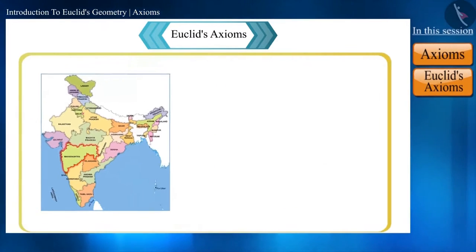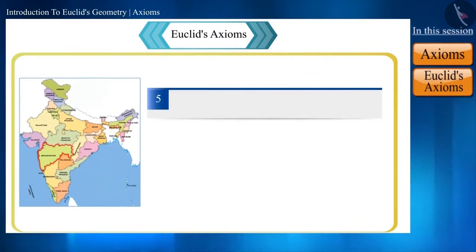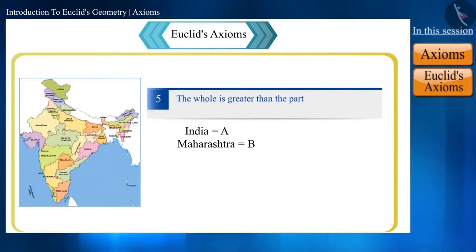Yes, friends, Euclid said the same thing in his fifth axiom. The whole is greater than the part. If we consider India as A, Maharashtra as B, and the remaining 27 states as C, then we can write A as somewhat like this.